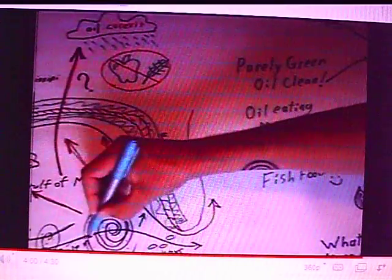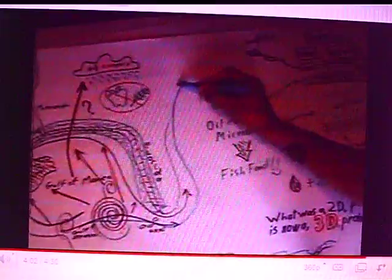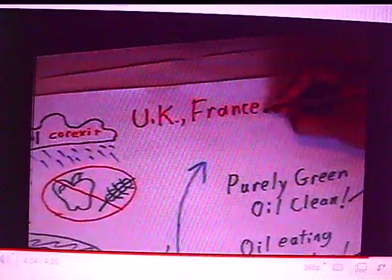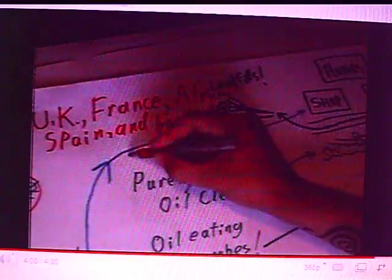With the oil becoming mixed with the Gulf Stream and progressing beyond the Florida Keys, first the east coast of the U.S. and Canada, then the British Isles, and the west coast of France, Spain, Africa, and beyond become affected. Within two to three years, it will have circled the globe.